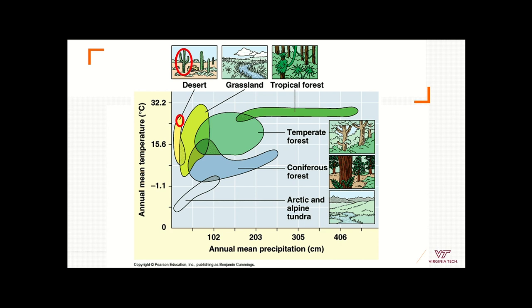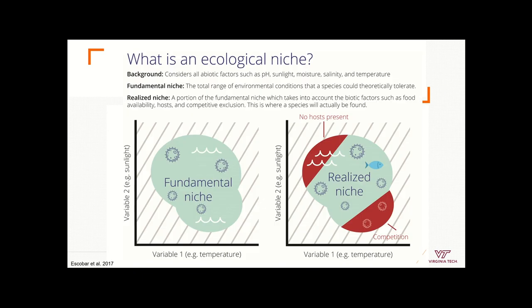If I want to model a single species, I can quantify the conditions in which that species occurs. However, when modeling diseases, we may want to model two species at the same time — the parasite and the host. The same theory we apply to model plants or mammals is the same theory we use to model the ecological niche of parasites. For example, instead of competition with another species, we may include the immune response of the host trying to compete against the invasion of the parasite.